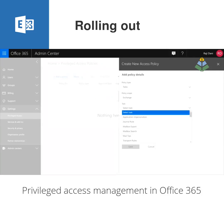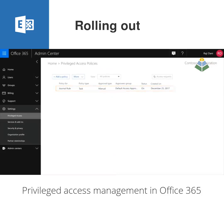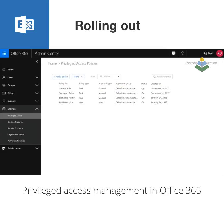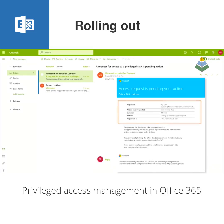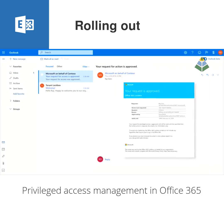You can define which tasks require privileged access requests via the admin portal, and when admins want to perform one of these tasks they can raise their requests for access via the portal or via PowerShell. Approvals are sent via email to the approvers — it's all very simple once it's configured.